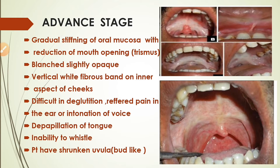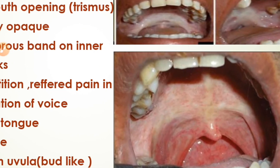Vertical fibrous bands can be felt on the inner aspect of the cheeks. There is difficulty in deglutition, referred pain in the ear, and change in voice — sometimes nasal intonation. Depapillation of the tongue leads to gustatory defect as papillae are lost. There is also inability to whistle as the oral cavity becomes stiffened, and the patient has a shrunken, bud-like uvula.